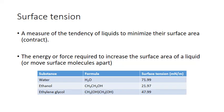Here are some measured surface tensions in units of millinewtons per meter of some common liquids. Water has an extremely high surface tension, reflecting the strong hydrogen bonding forces between its molecules and the small size of those molecules. Ethanol also has hydrogen bonding, but the molecule is larger. For the same surface area of ethanol and water, there are fewer molecules of ethanol, and therefore fewer intermolecular interactions — so the smaller the molecule, the higher the surface tension.